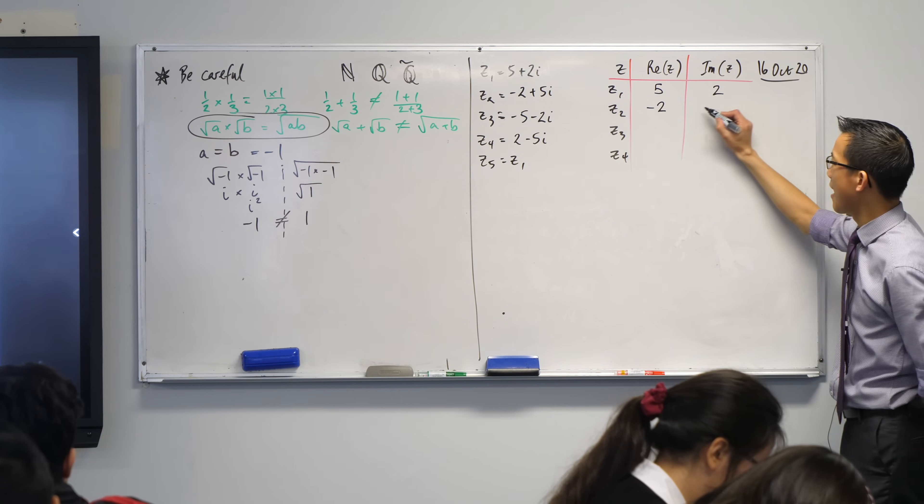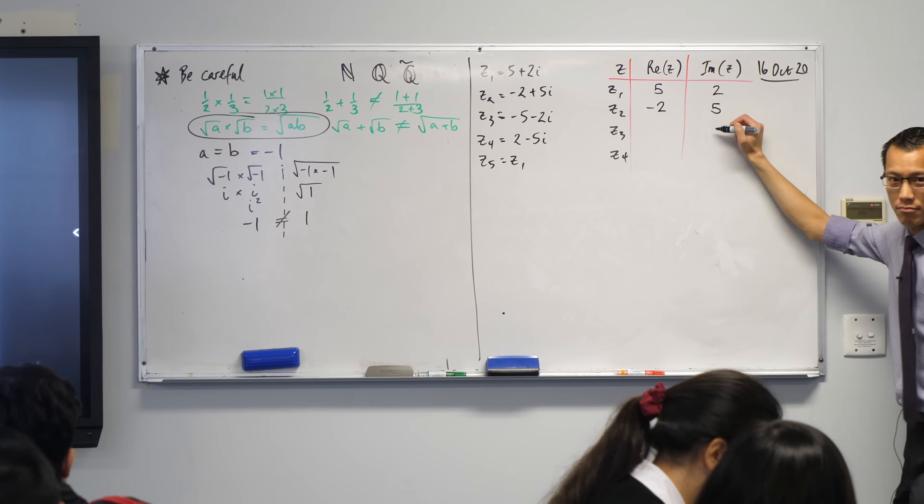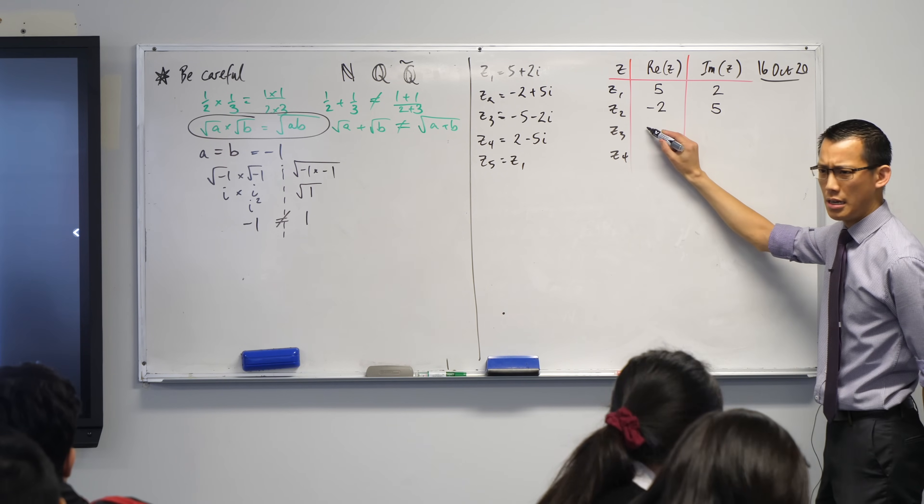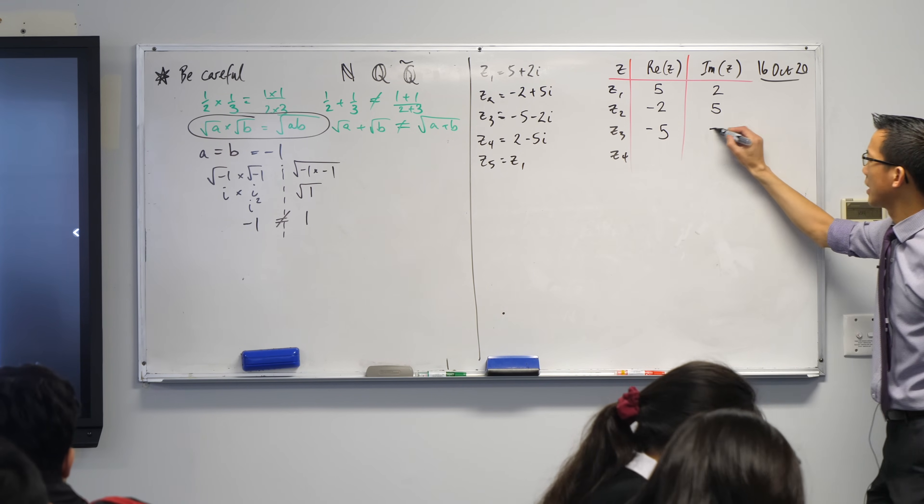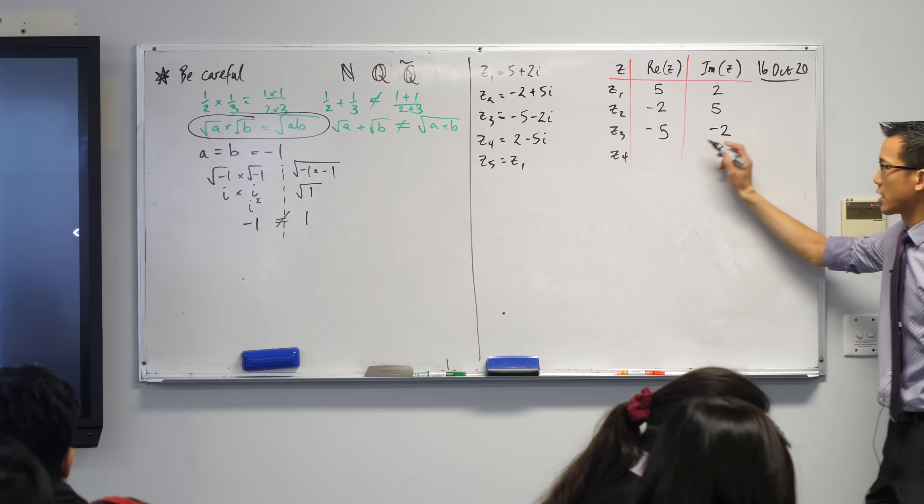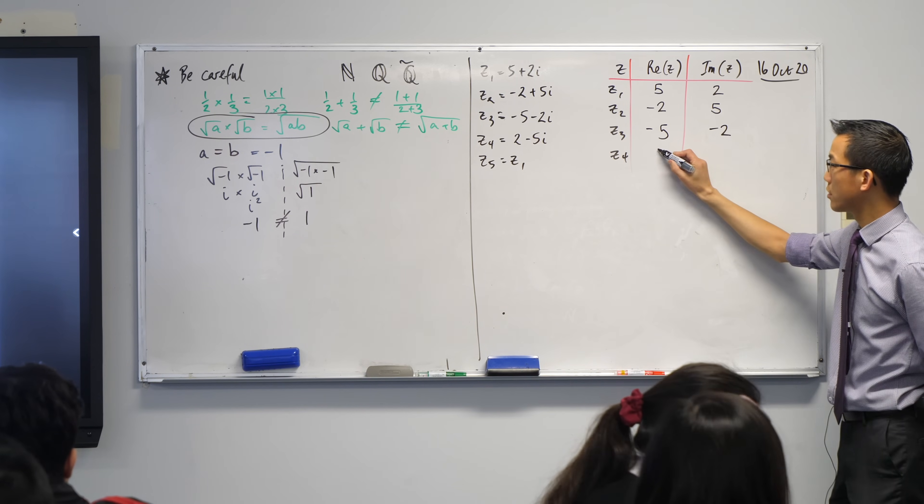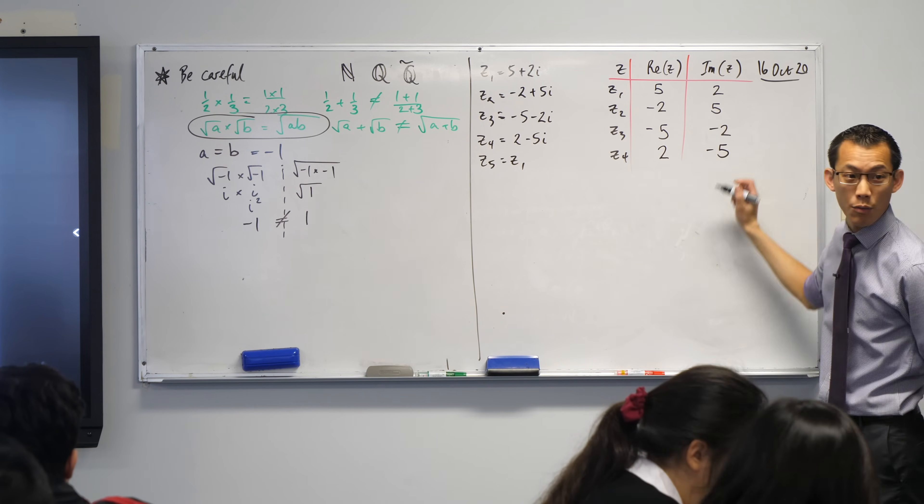Real component is 5. Imaginary component is 2. Next one, Z2. Negative 2 and positive 5. Yeah? Next one down, negative 5, negative 2. Last one here, 2 and negative 5. You okay with that?